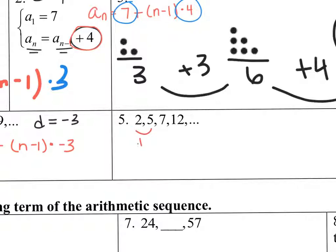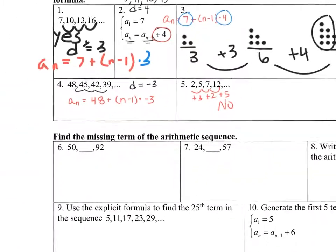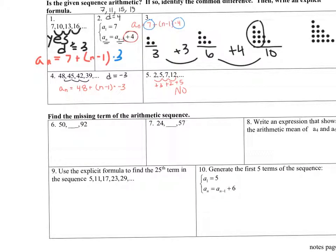Problem 5: Are we adding or subtracting by the same number every time? No — the differences are 3, 2, 5, with no consistent pattern, so it's not arithmetic. If it's not arithmetic, you don't write a formula. Problem 6: Find the missing term. This means finding the arithmetic mean of 50 and 92. Add them and divide by 2: (50 plus 92) divided by 2 equals 71.